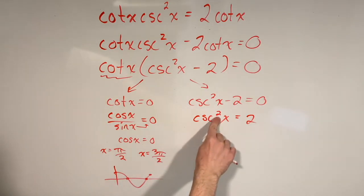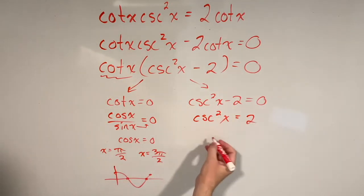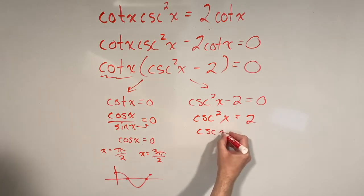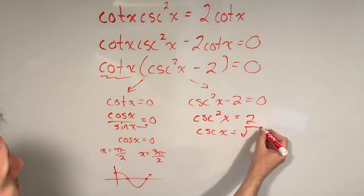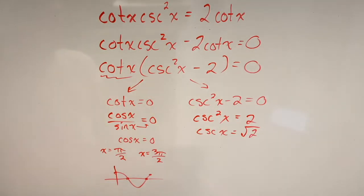And I also don't like this power of two here, so we're going to get rid of that by taking the square root of both sides. That's just going to leave me with the cosecant of x, and that's going to be equal to the square root of two. Now before we move forward, we should think about what cosecant of x is.